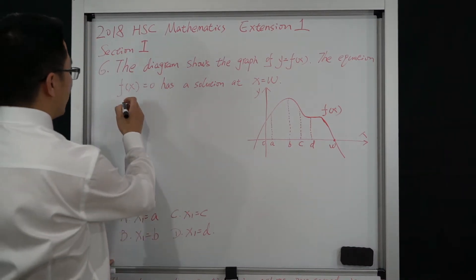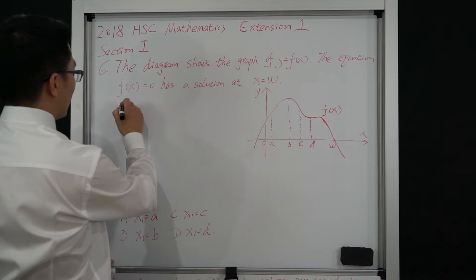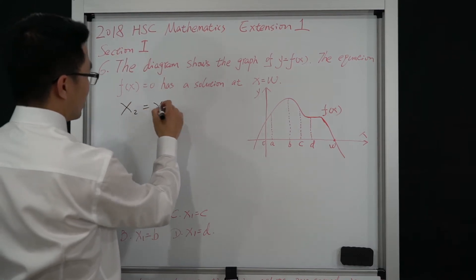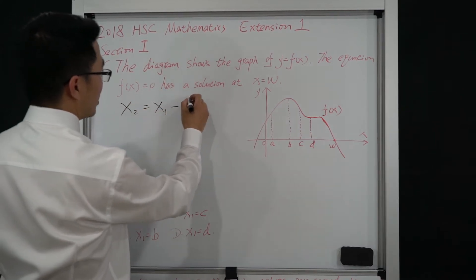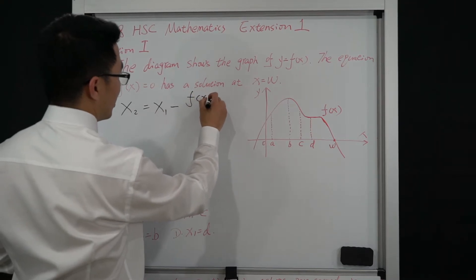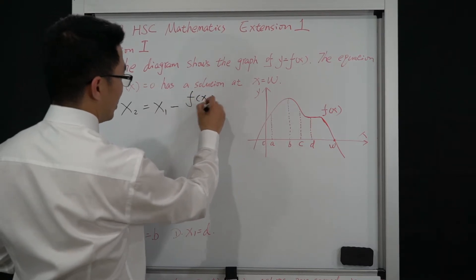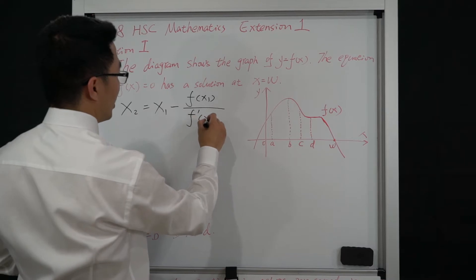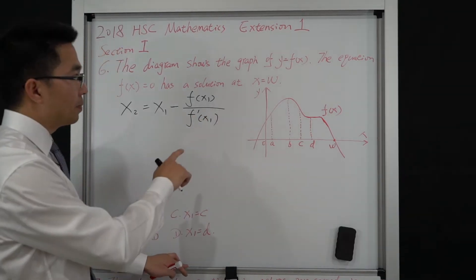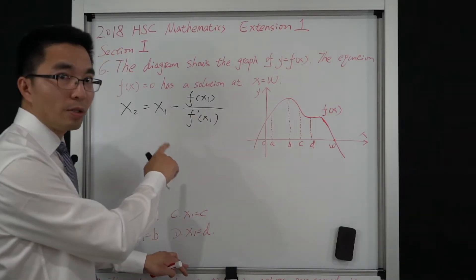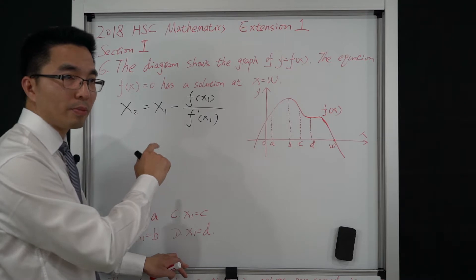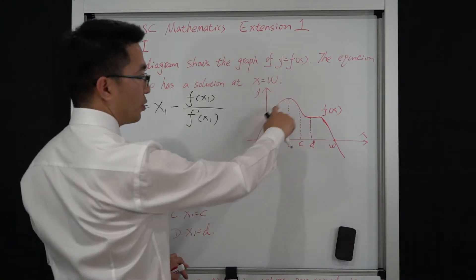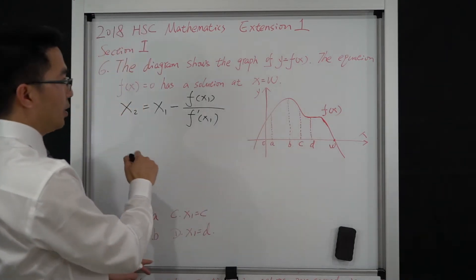For Newton's method, we have the second approximation x₂ equals the first approximation x₁ minus f(x₁) divided by the differential of the function at x₁. To find the solution for this question, we can start from the tangent equation of the function at these four points.